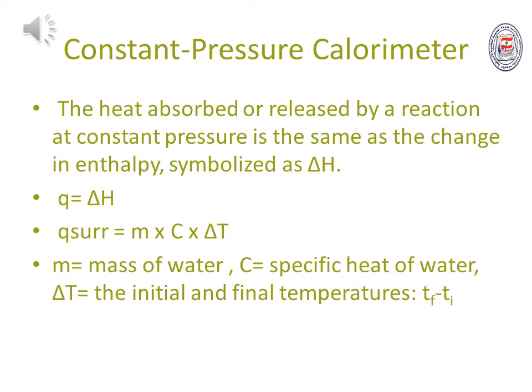To measure the enthalpy change for a reaction in aqueous solution in a foam cup calorimeter, dissolve the reacting chemicals — the system — in known volumes of water, the surroundings. Measure the initial temperature of each solution and mix the solutions in the foam cup. After the reaction is complete, measure the final temperature of the mixed solution. You can calculate the heat absorbed or released by the surroundings using the amount of water, the specific heat of water, and the initial and final temperatures.